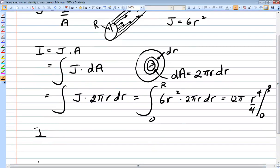So that the total current in the wire would be 3 pi r to the 4. And that would be the answer for the total current in the wire.